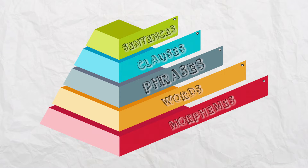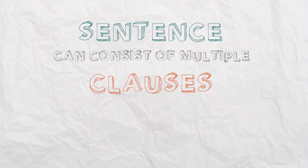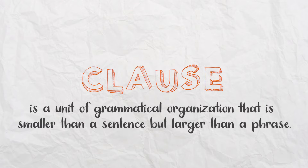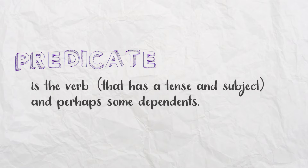According to the model, the sentence is the highest level and the biggest structured unit, then we have clauses. For the purposes of this video, let's limit our discussion to simple sentences. A simple sentence is basically a clause — a sentence that consists of one clause. A clause is a unit of grammatical organization that is smaller than a sentence, and more importantly, a clause has a subject and a predicate. The predicate is the verb with all its dependents.